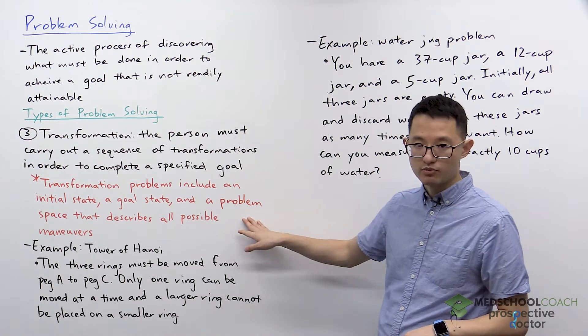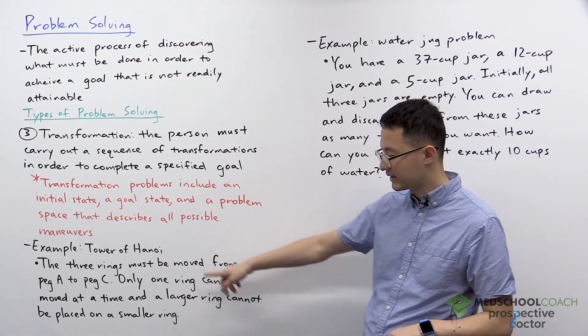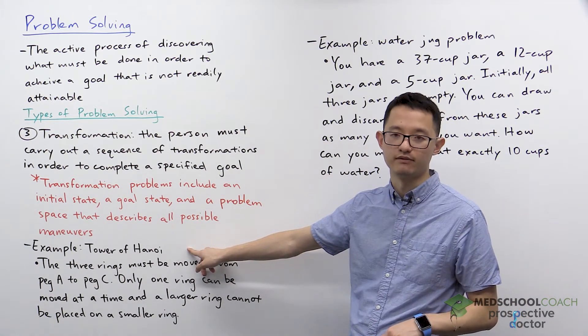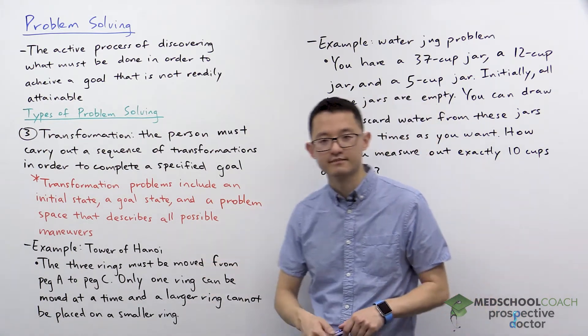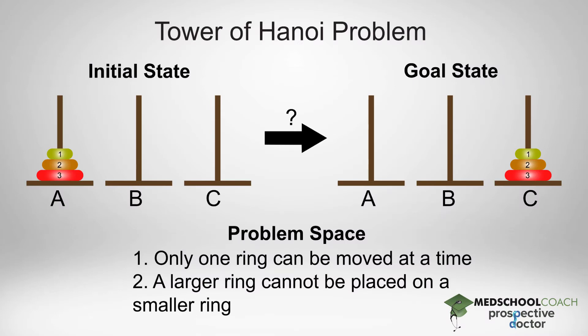To better understand how these terms work, let's take a look at this example with the Tower of Hanoi. In this diagram, you can see how the Tower of Hanoi problem works. There are three pegs: A, B, and C. Initially, you have three rings on peg A, with the largest ring on the bottom and the smallest ring on the top. This represents our initial state.